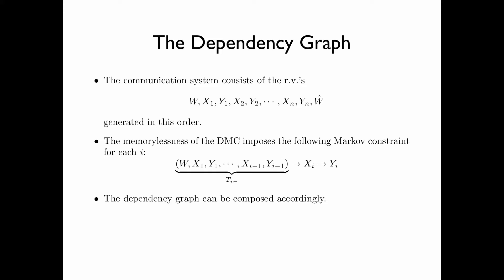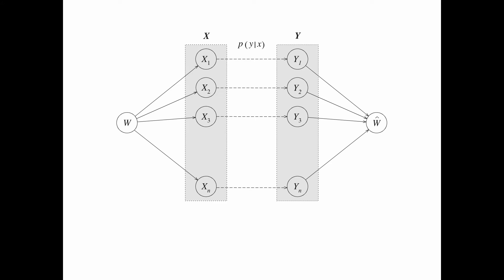The dependency graph, which illustrates the Markov constraints of the random variables, can be composed accordingly. The random variables involved in this problem are generated in the following order: W, X1, Y1, X2, Y2, X3, Y3, all the way to Xn, Yn, and Ŵ.